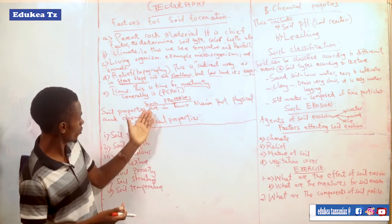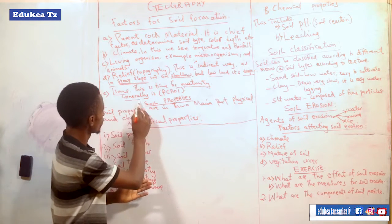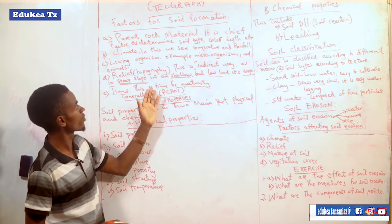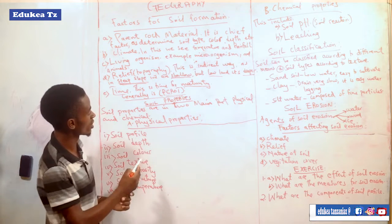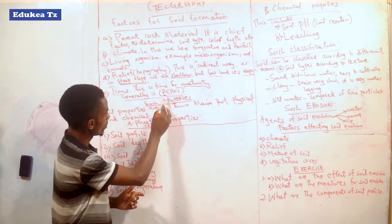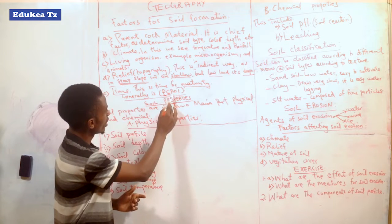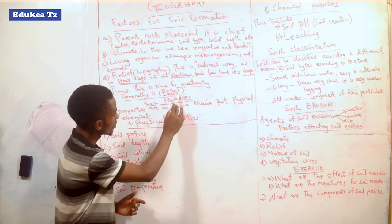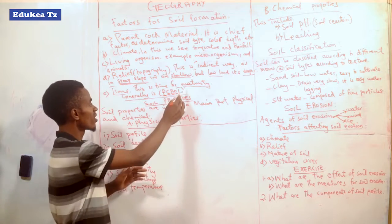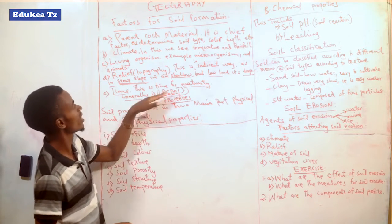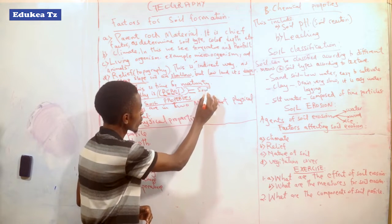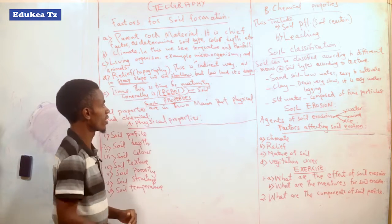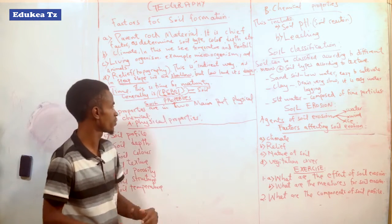Before we look at the soil properties, here is a general mnemonic for the factors of soil formation called PCROT. P means parent rock, C means climate, R means relief, O means organism, and T means time. So in short, PCROT represents the factors for soil formation — these are the factors which form the soil.